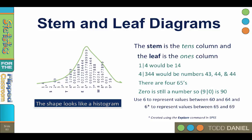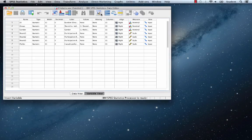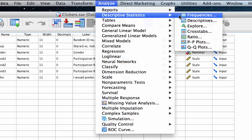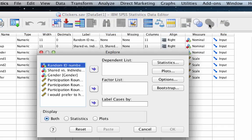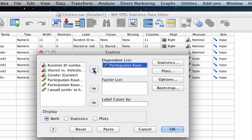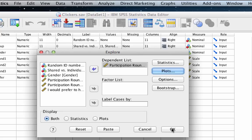You create a stem and leaf using the explore command in SPSS. Using the data set clickers.sav, go to Analyze, Descriptive Statistics, Explore. We're going to move Participation from Round 1 into the Dependent List. Now click on Plots. You'll notice that Stem and Leaf is already selected, so we don't actually need to do anything here. Let's just click Continue and OK.